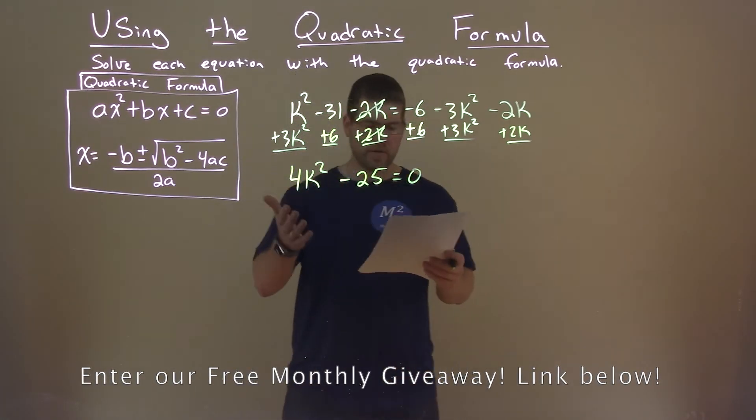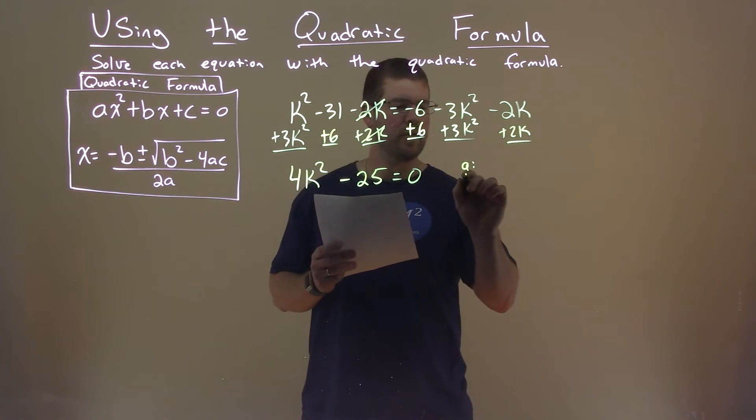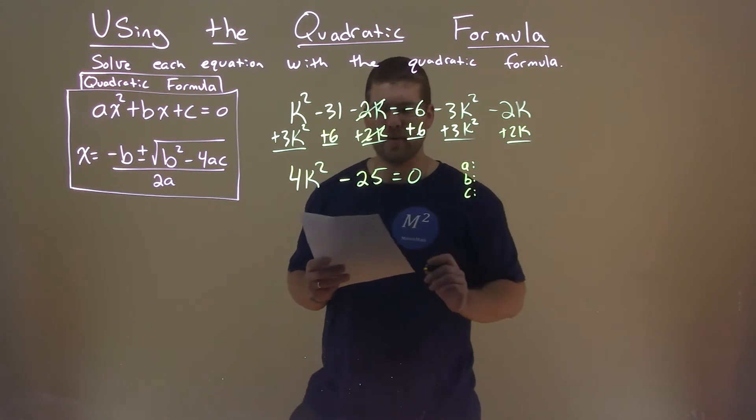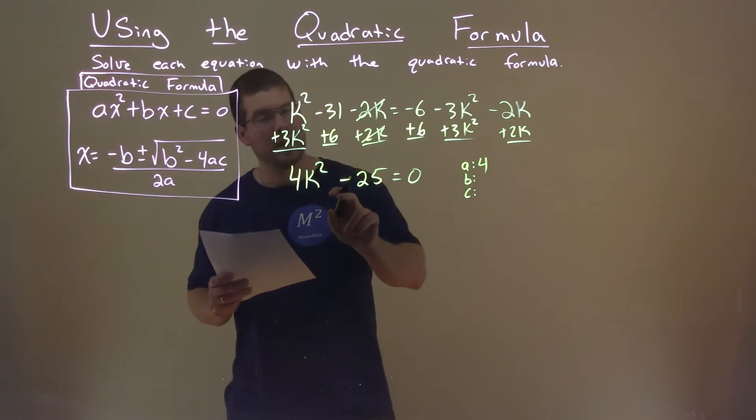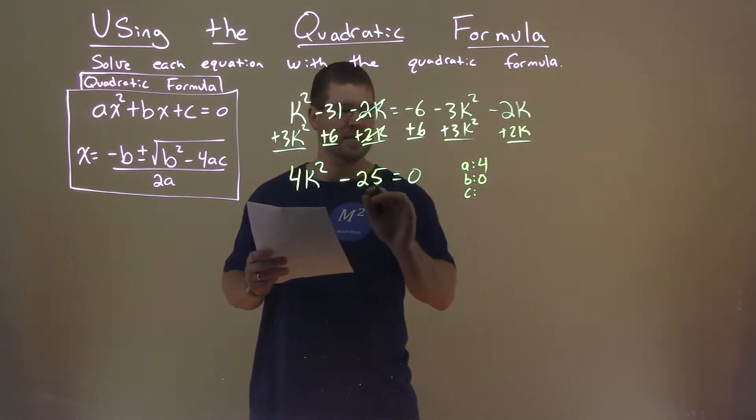So with this information now, we need to find our a value, our b value, and our c value. a value is 4. b value, canceled out, so it's a 0. And our c value is negative 25.